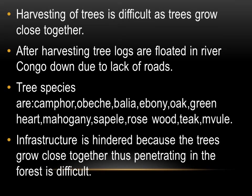Infrastructure — that is roads — is hindered because the trees grow close together, making it very difficult to penetrate the forest and construct roads. That is why, when trees are harvested, the stems are cut and thrown into River Congo where they are carried by water downstream to the mouth of the river, then loaded onto lorries and taken to the industry for processing and manufacturing of paper.